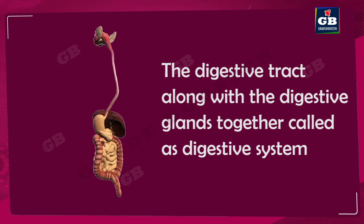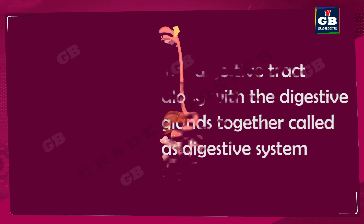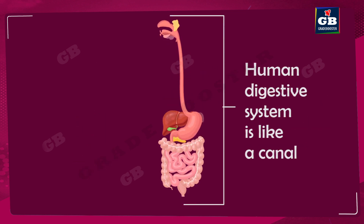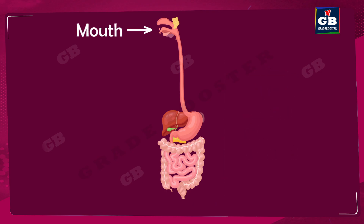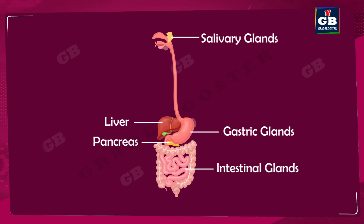Let us revise the important points of this video. Our digestive system is like a long canal. The alimentary canal begins with the mouth and ends with the anus. The glands attached to our alimentary canal are called accessory glands. The digestive tract along with the accessory glands is called the digestive system.